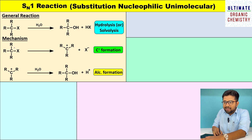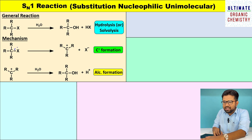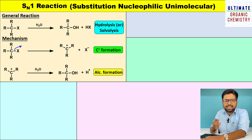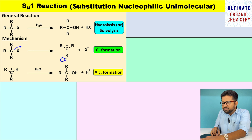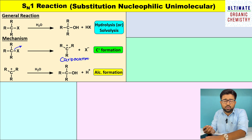What happens here is the leaving group — that is the halogen atom — from the tertiary alkyl halide is leaving as X minus. That means this halogen takes the electron from the carbon atom and leaves as X minus. As a result, a carbocation intermediate is generated in the first step, otherwise called as carbocation formation.